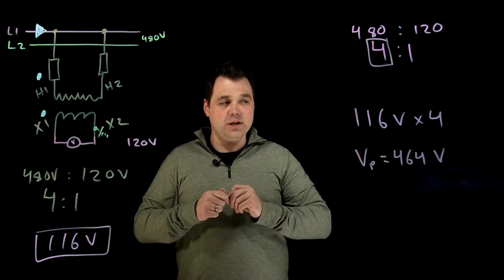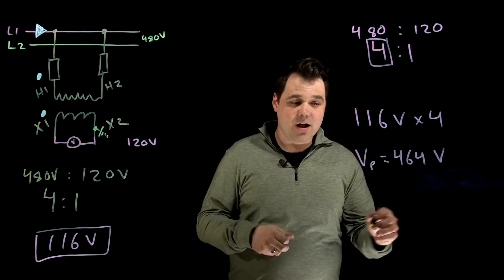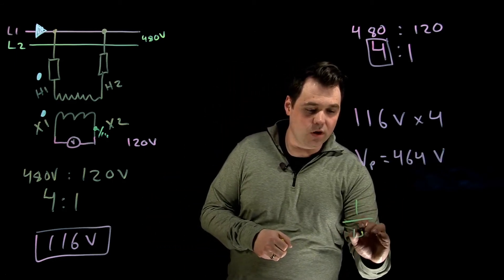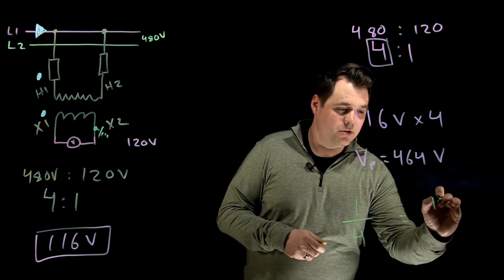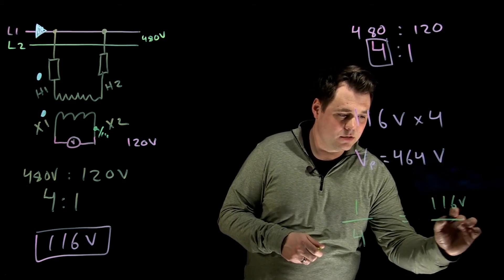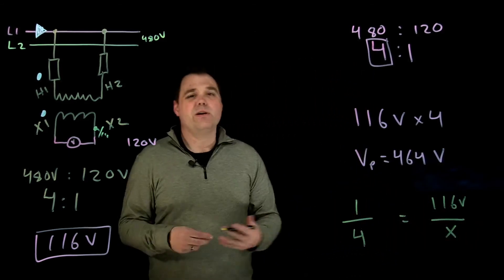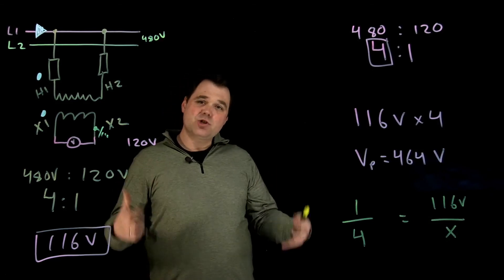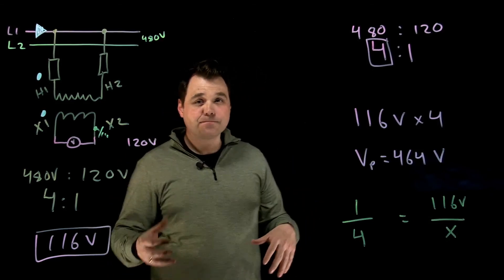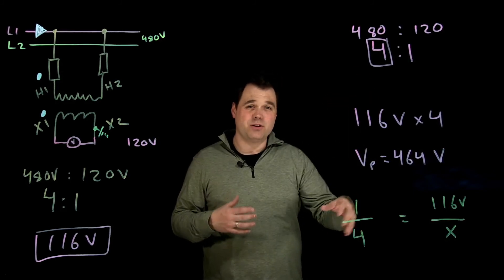This comes down to a little bit of a relationship. You can set it up by going 1 to 4 is equal to 116 volts over x, and rearrange that formula to calculate. That's kind of the general idea behind PTs and a basic calculation.